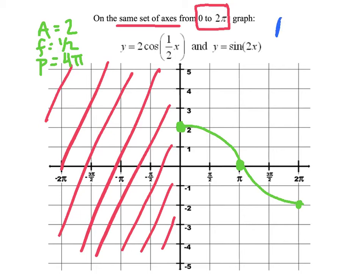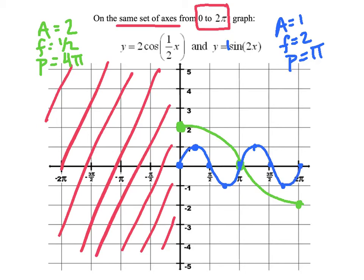For sin(2x), the amplitude is 1, the frequency is 2, and the period is π — since 2π divided by 2 is π. The sine curve starts with a root, ends at another root at π, with a root halfway between and maxes and mins in between. I repeat that cyclical process for the second curve from π to 2π. A common question is where these two graphs intersect — they intersect right at π.